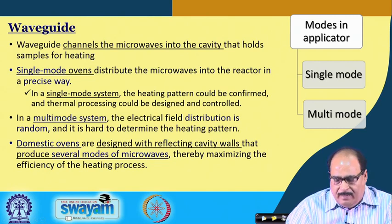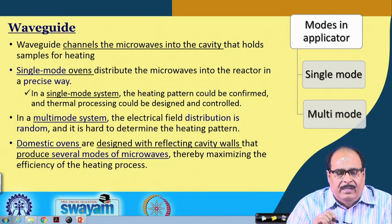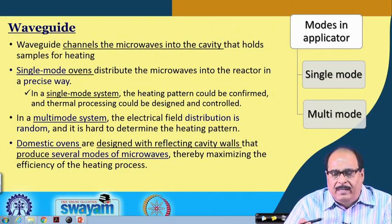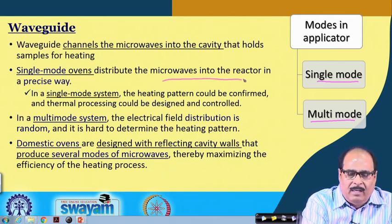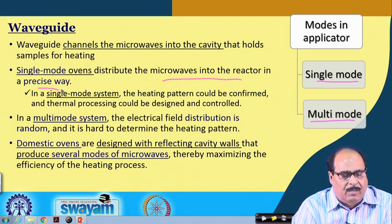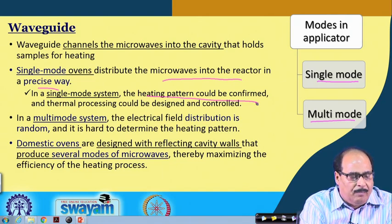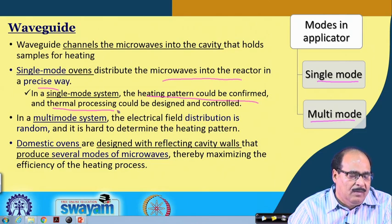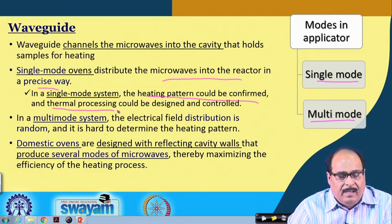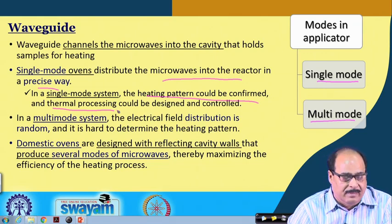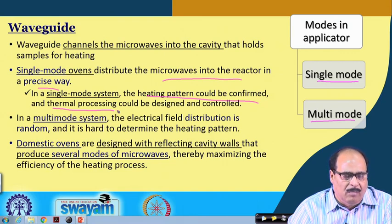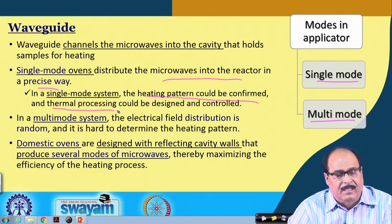The waveguide channels the microwave into the cavity that holds the sample for heating. There are two modes of waveguide applicator: single mode and multimode. Single mode ovens distribute microwaves into the reactor in a precise way; the heating pattern can be confirmed and thermal processing can be designed and controlled. In a multimode system the electrical distribution is random and it is hard to determine heating patterns. Domestic ovens are designed with reflecting cavity walls that produce several modes of microwaves, maximizing heating efficiency.